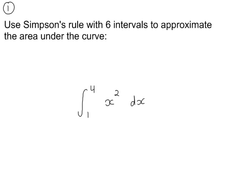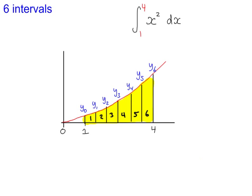Example one: we're going to use six intervals or six vertical strips to estimate the area under the curve. X equals one, x equals four. There are six vertical strips, and these are the y values for each ordinate.